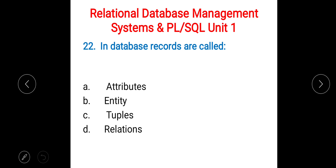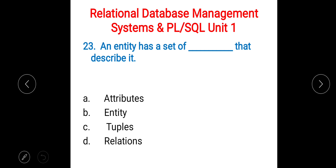Next question: in a database, records are called — A) attributes, B) entity, C) tuples, D) relations. The right answer is tuples. An entity has a set of attributes.